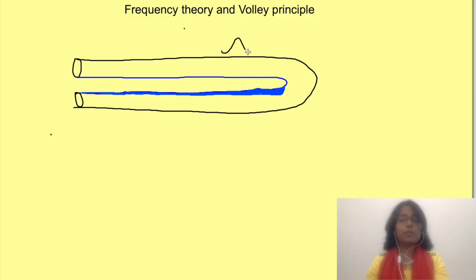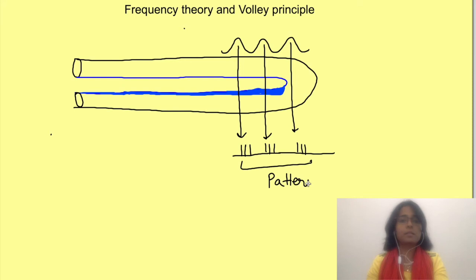According to frequency theory, a pressure wave will generate action potentials in the afferent with each cycle of the sound wave. This is the pressure wave; with each cycle, a set of action potentials are generated. This pattern depicts the frequency of sound, and this pattern is recognized by auditory cortex as a particular frequency.